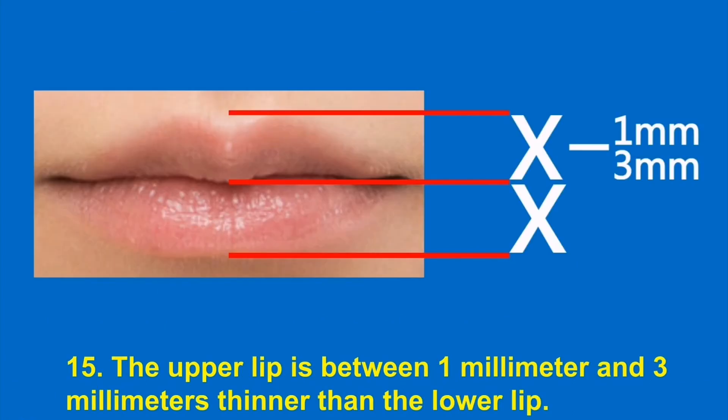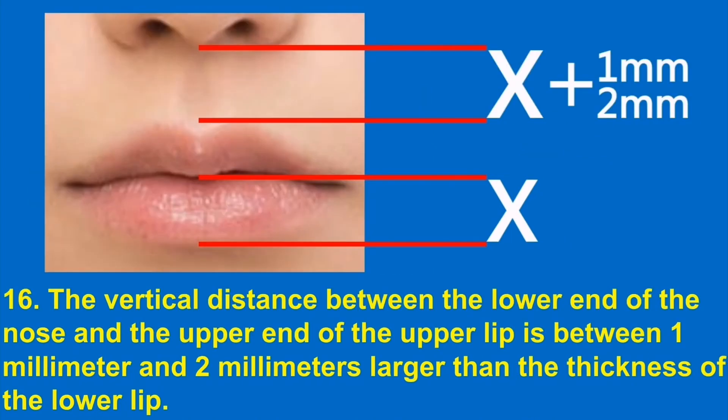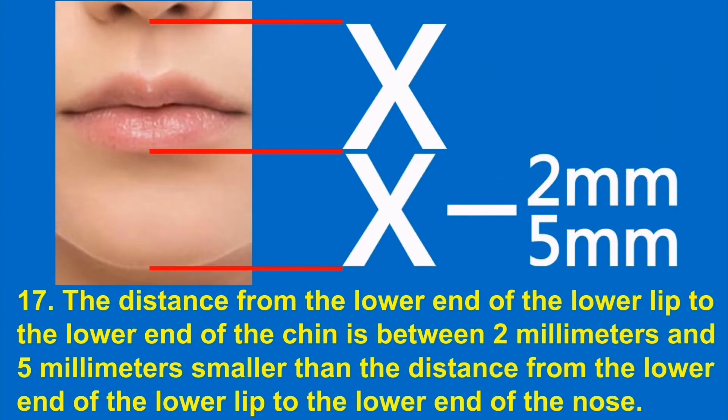15. The upper lip is between 1 millimeter and 3 millimeters thinner than the lower lip. 16. The vertical distance between the lower end of the nose and the upper end of the upper lip is between 1 millimeter and 2 millimeters larger than the thickness of the lower lip. 17. The distance from the lower end of the lower lip to the lower end of the chin is between 2 millimeters and 5 millimeters smaller than the distance from the lower end of the lower lip to the lower end of the nose.